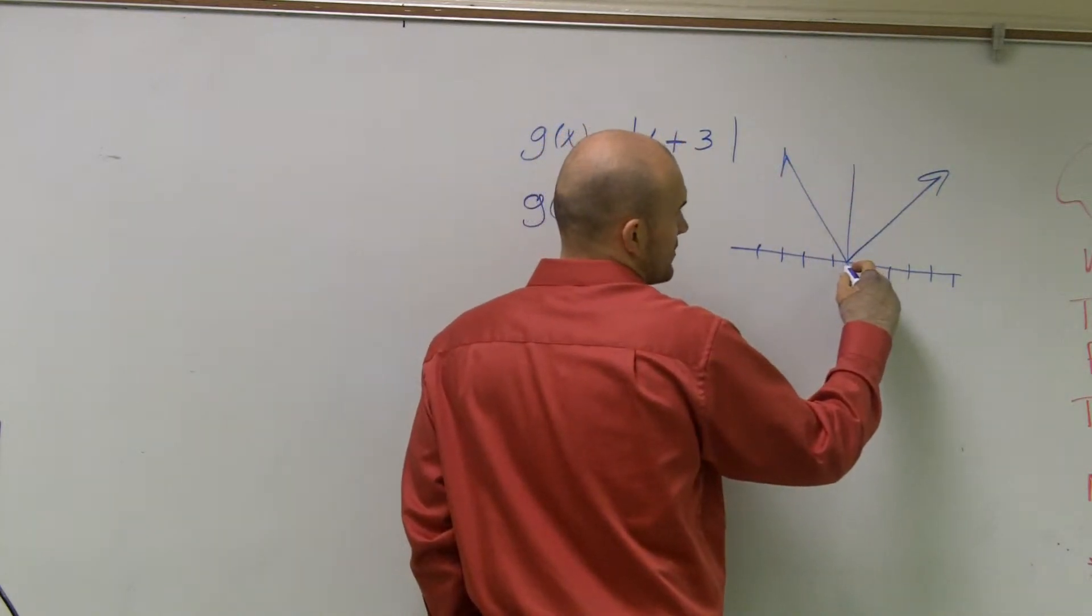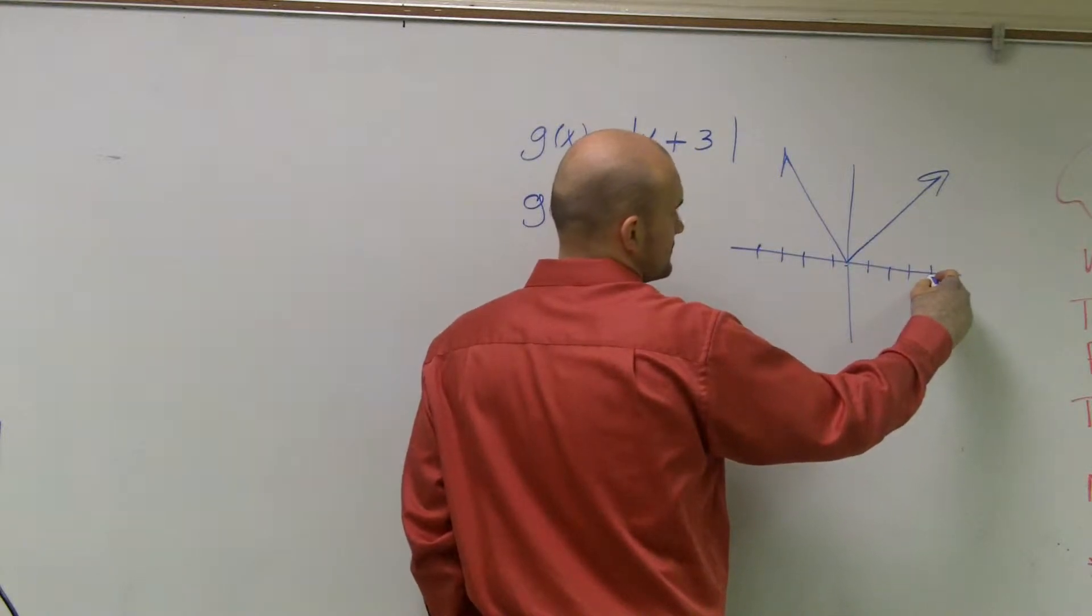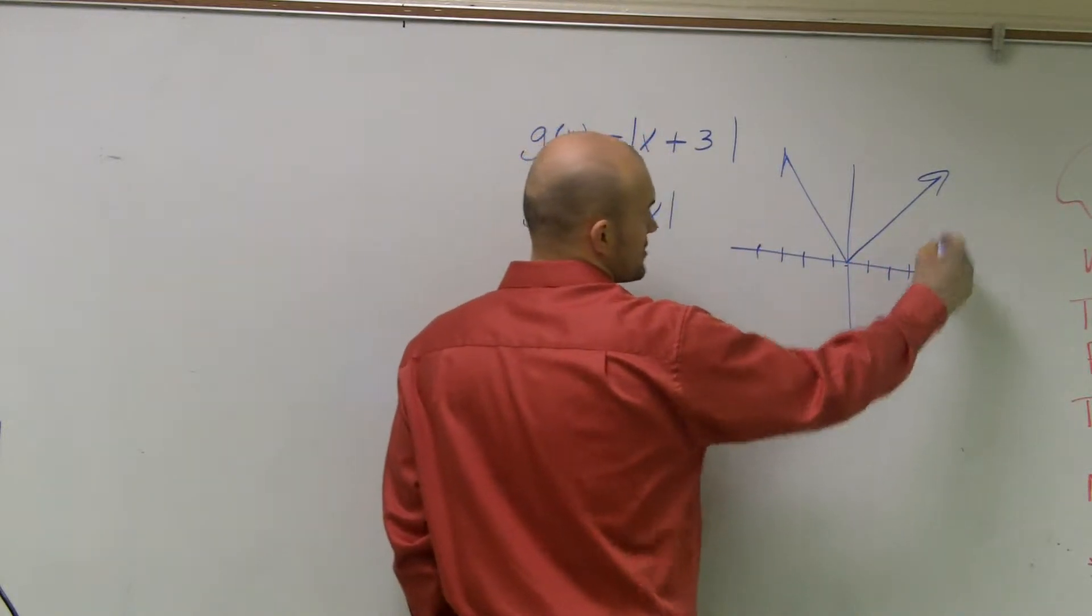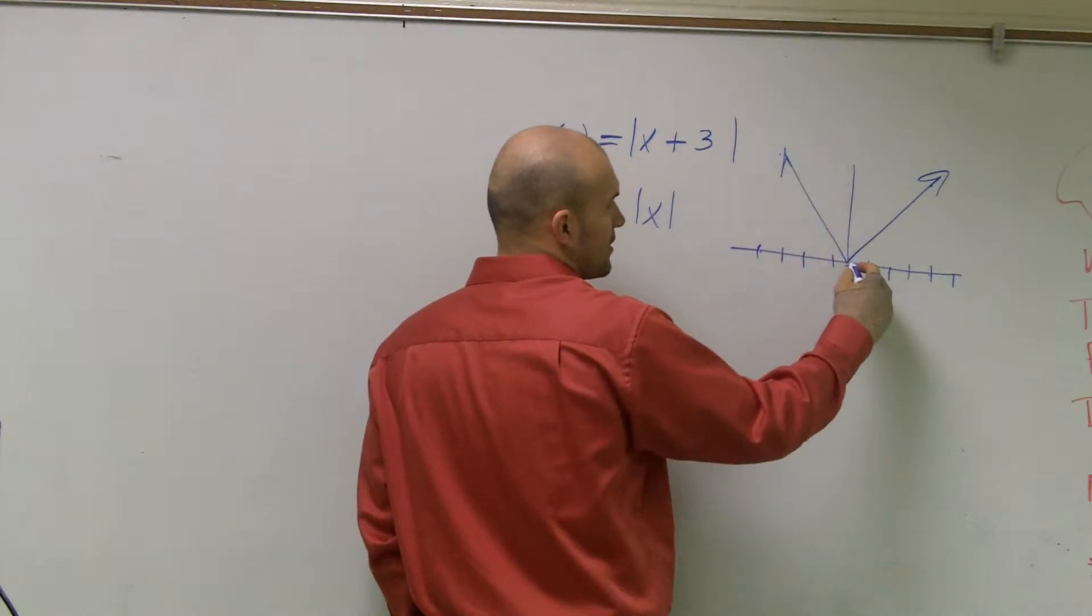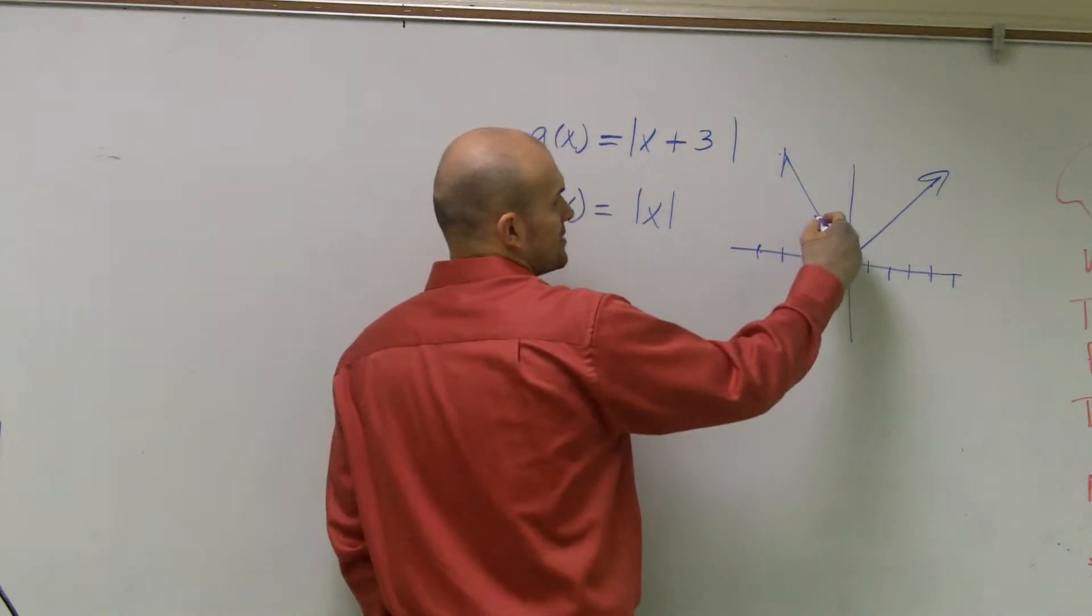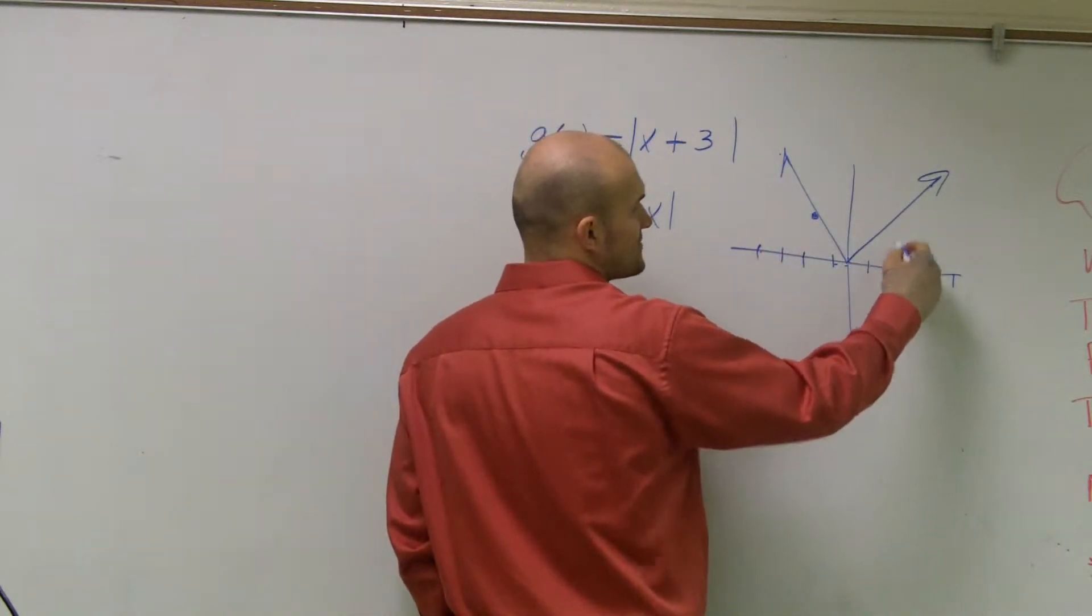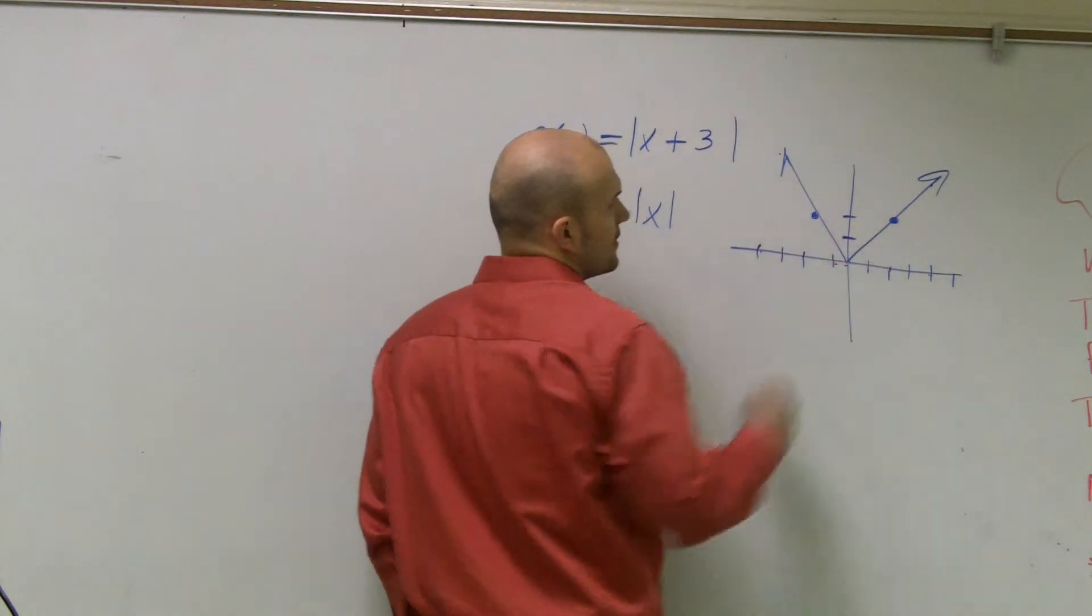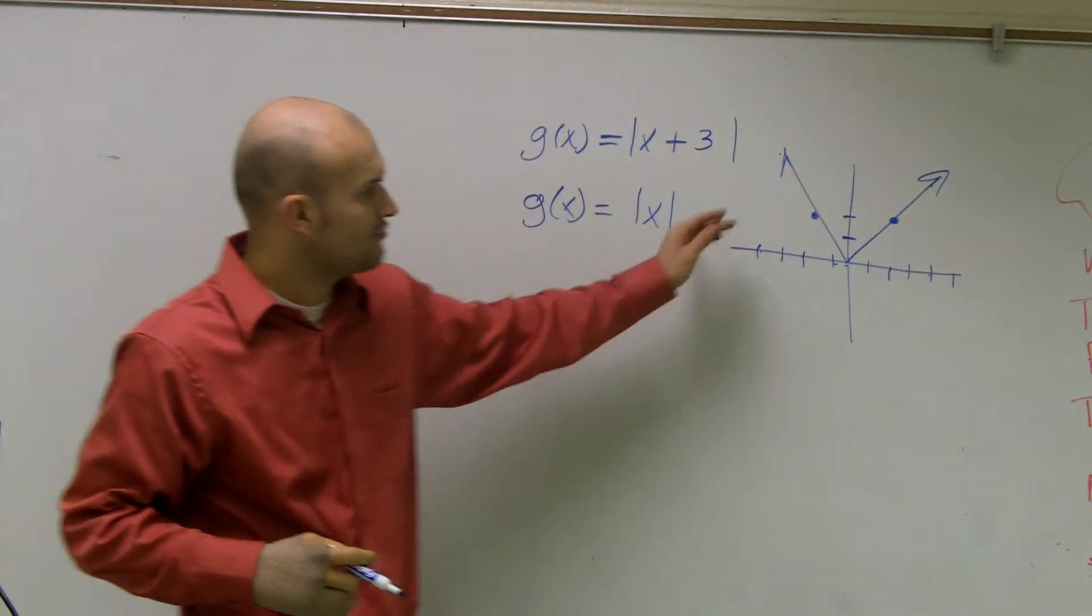Because remember what I talked about, positive 4 still gives you 4, and negative 4 still gives you 4. The absolute value of negative 2 is still 2, the absolute value of positive 2 is still 2. So it's a symmetrical V.